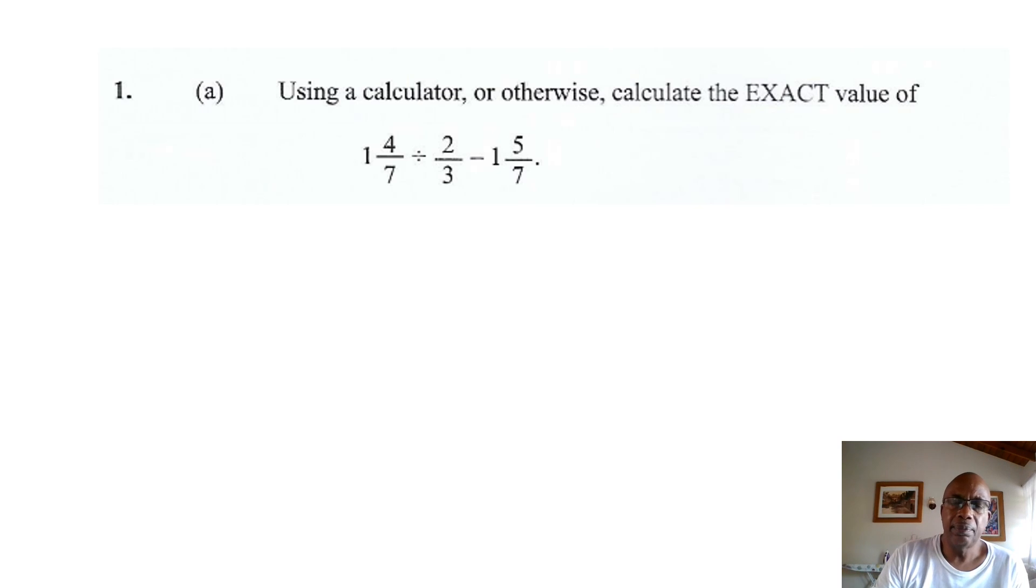In this question, you are asked to divide 1 and 4 sevenths by 2 thirds and then subtract 1 and 5 sevenths. Now, normally there is more than one way to do any problem. But what I prefer to do is convert these mixed numbers into improper fractions.